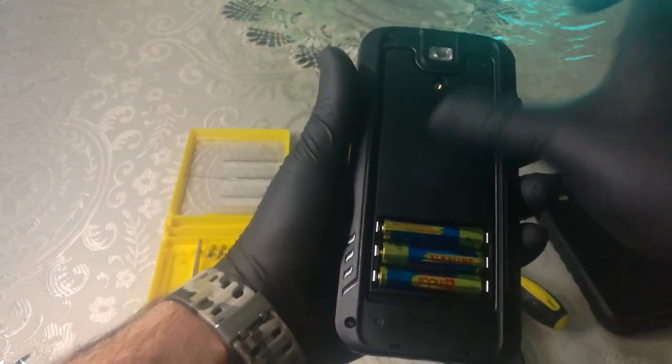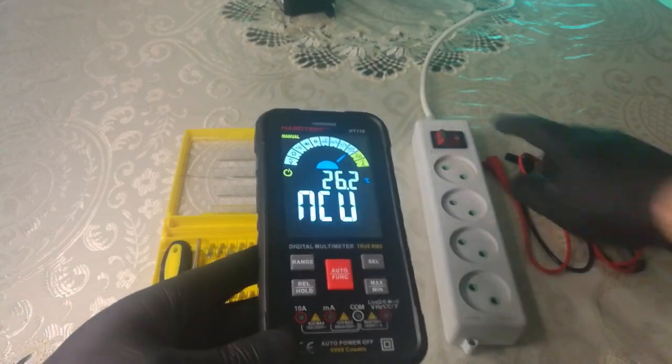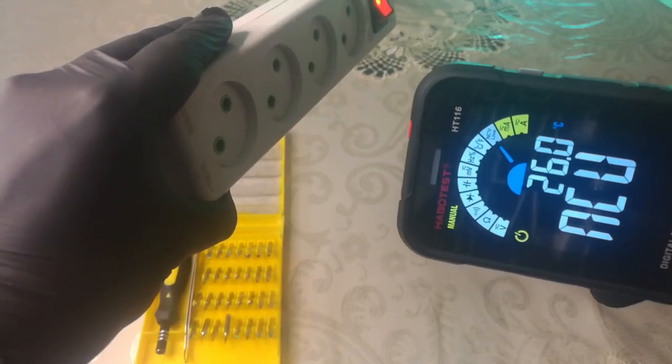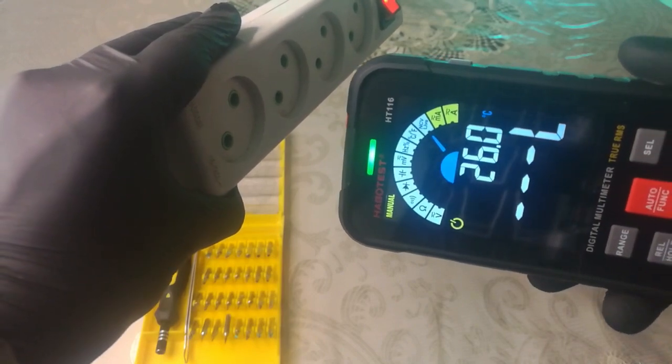Now it's time to test the NCV function by setting the multimeter to NCV and trying to get it close to current electricity. It starts to beep and indicates the high or low voltage by LED on the top which goes green and red.